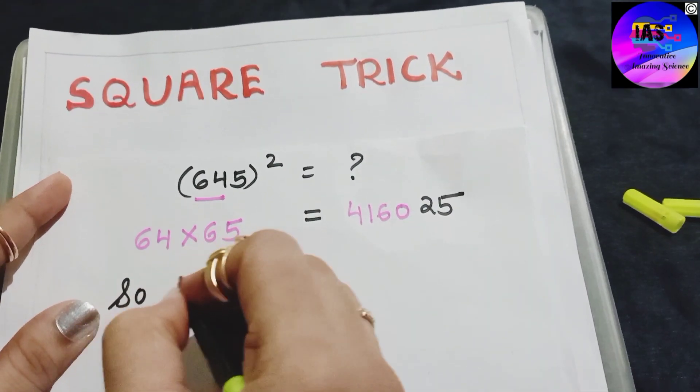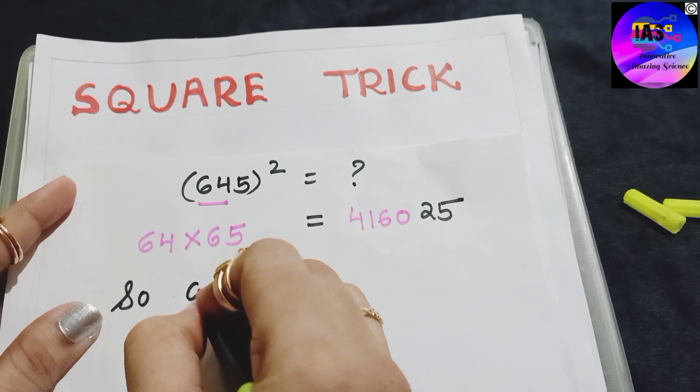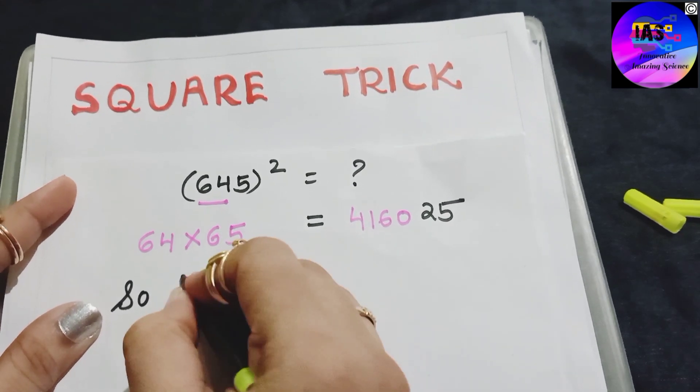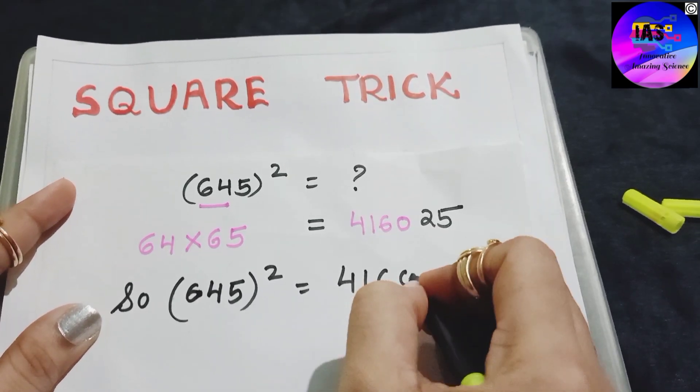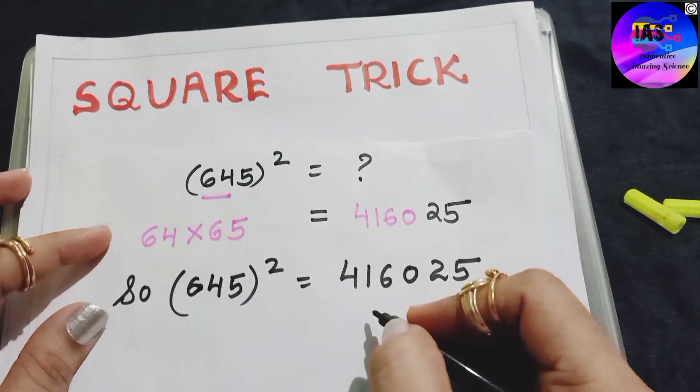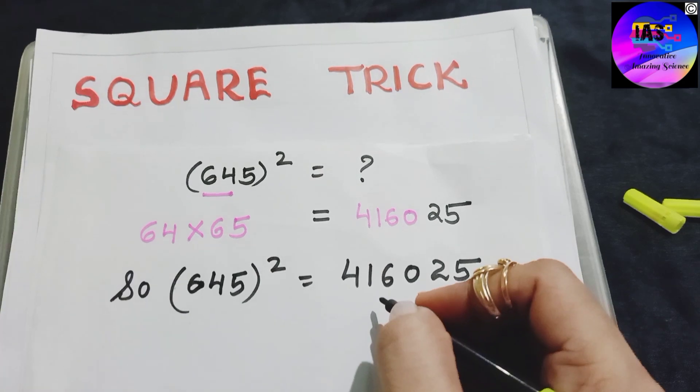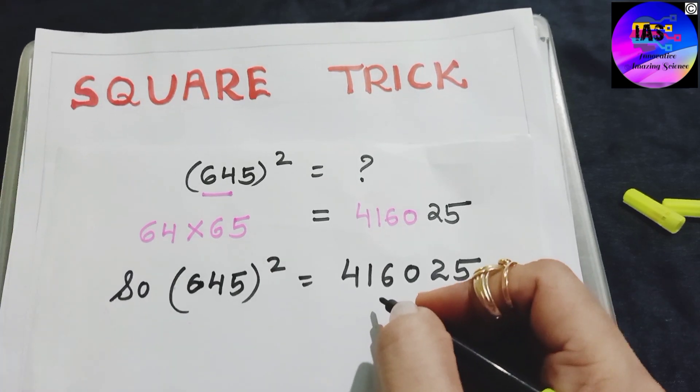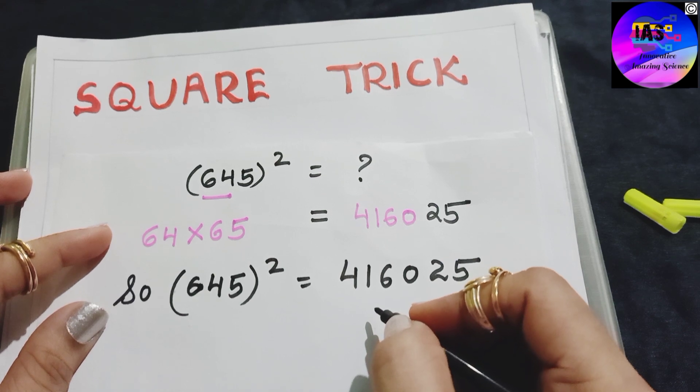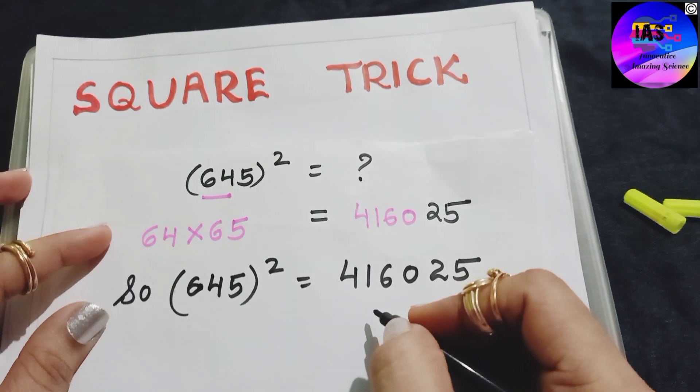So finally, 645 square is 416025. Now let us understand how we found it out. If you observe 645, first thing we will do is the units place, that is 5. 5 square we already wrote as 25.